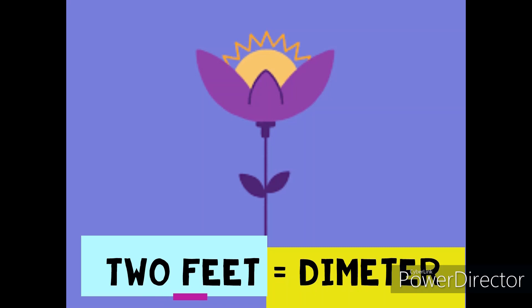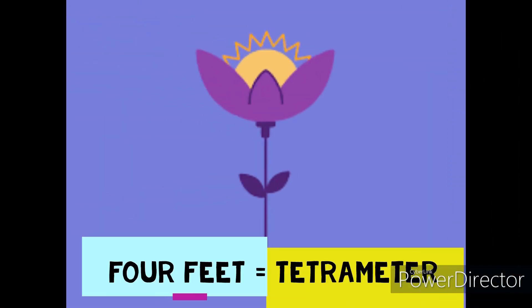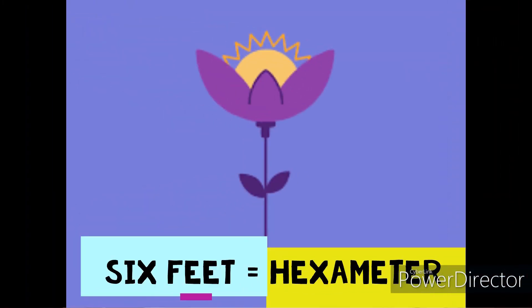One foot means two syllables. If we have two feet, it means four syllables, and two feet is called dimeter. If we have three feet, three feet are made of six syllables, and three feet is called trimeter. If we have four feet, four feet are made of eight syllables and are called tetrameter. If we have five feet, five feet are composed of ten syllables and are called pentameter. If we have six feet, that means twelve syllables, and six feet is called hexameter.